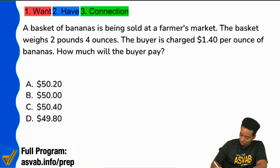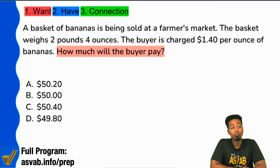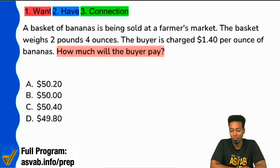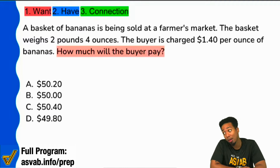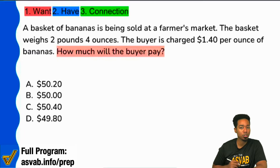Read the question first — how much will the buyer pay? Quick question, no context yet, but does it sound like someone's buying something and we're just finding that cost? Keep it simple, don't overcomplicate it, don't overthink. Next up, we're looking for how much we're supposed to be paying — let's read through the information.